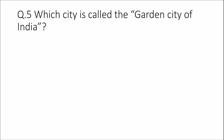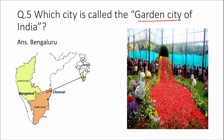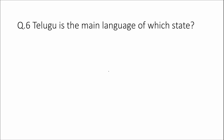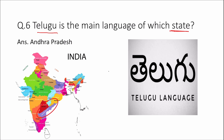Question 5: Which city is called the Garden City of India? Answer: Bengaluru. Bengaluru is located in Karnataka. Question 6: Telugu is the main language of which state? Answer: Andhra Pradesh.